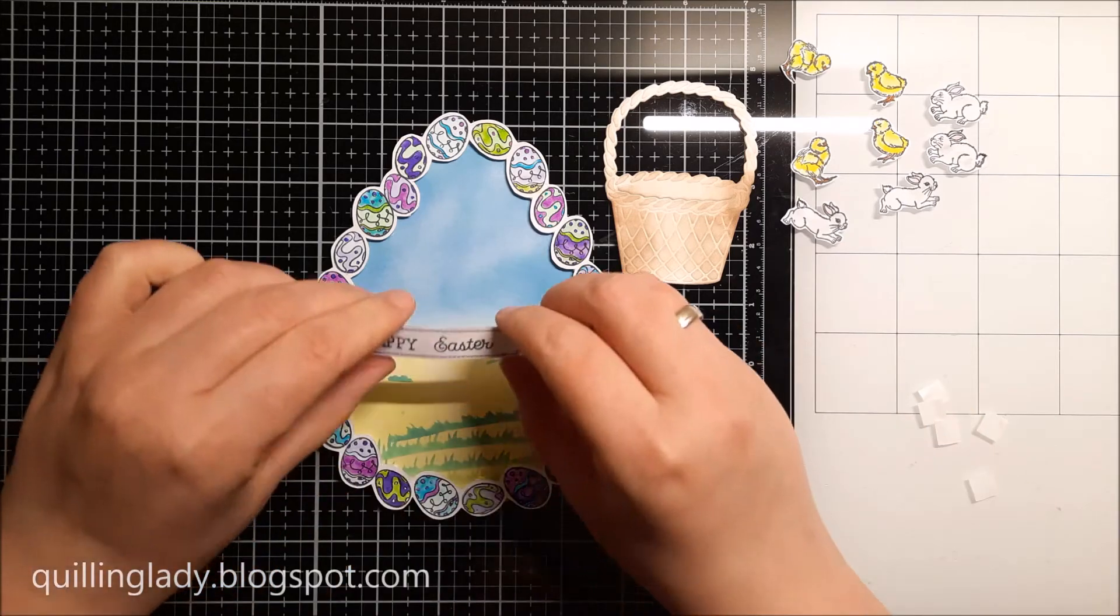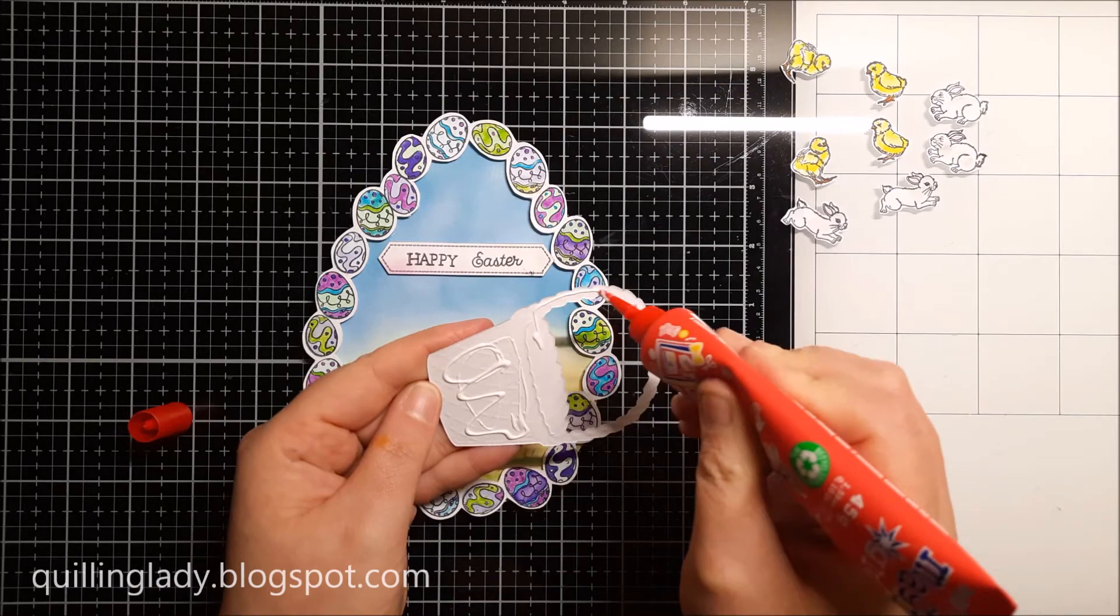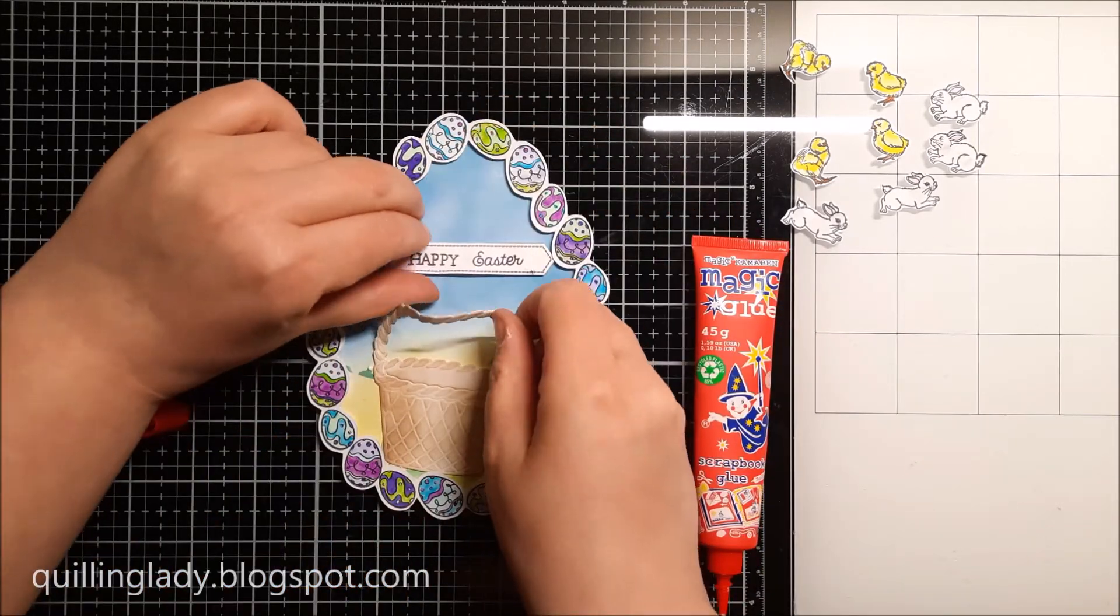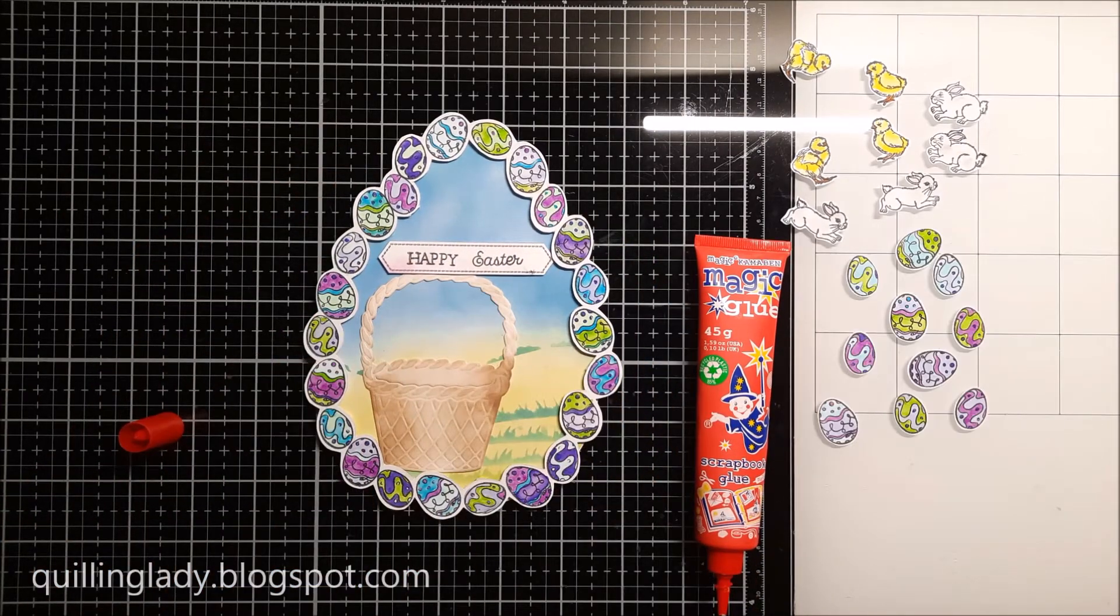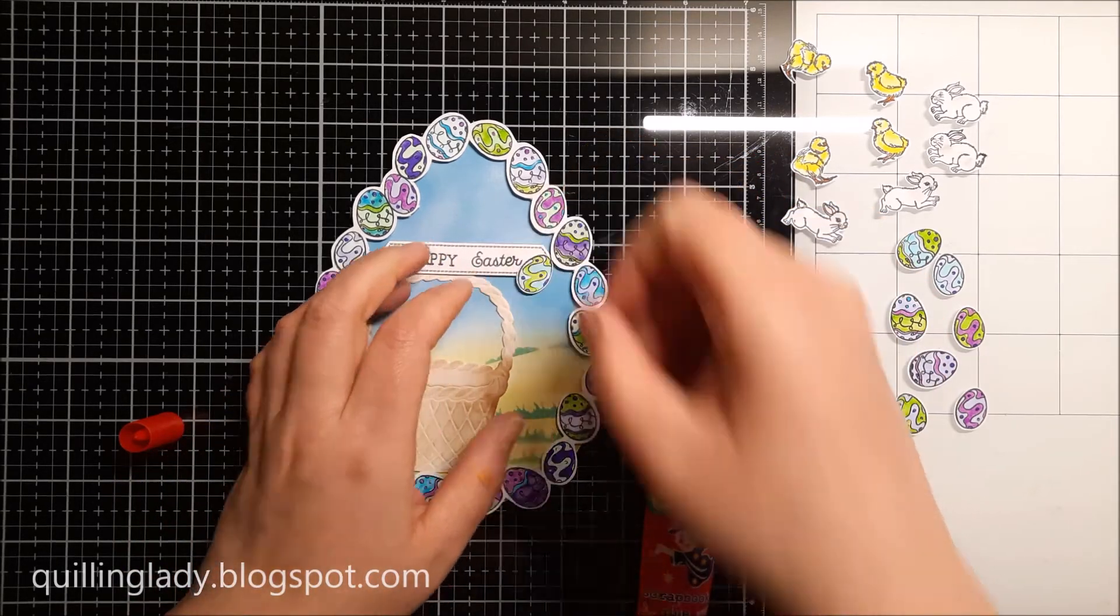Now I'm going to use my one and only liquid glue Magic Glue and I'm going to start assembling all the pieces together. With the basket, as you saw, it was a little bit tricky because I just bowled with the sentiment and I had to move the basket, but that was fine.